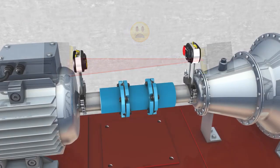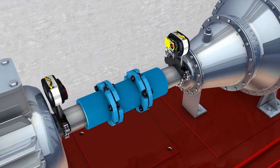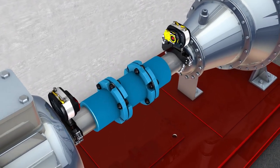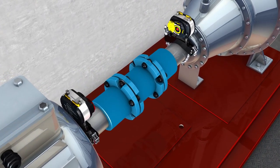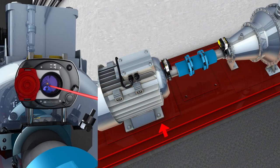In a nutshell, here is what to do: always place the laser on the stationary machine, here the pump, and the sensor onto the movable machine, here the motor. When you move the motor, the laser beam stays within the detector range.